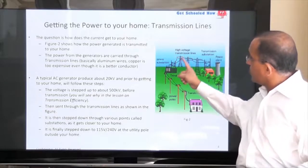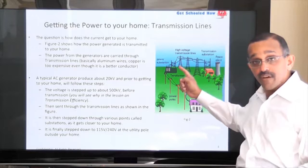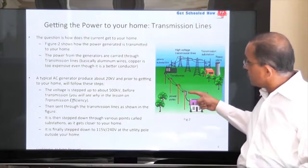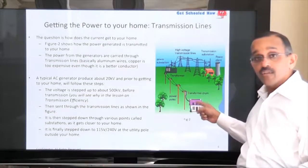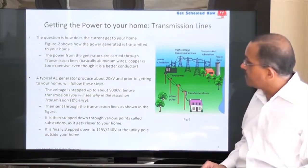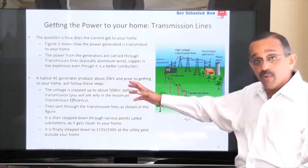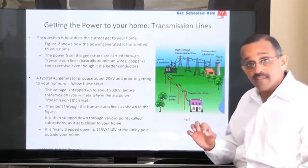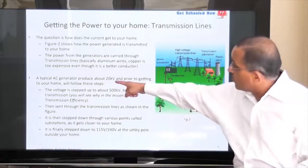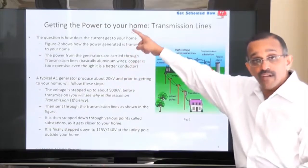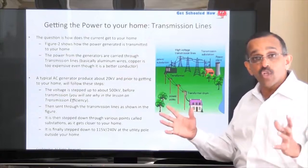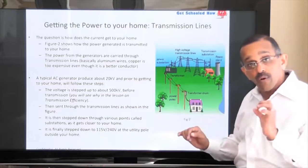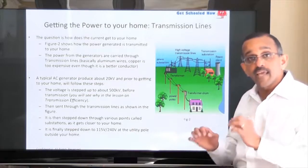When transferring power, it's transferred at very high voltage — about 500 kilovolts. These power substations drop the voltages down before it finally goes to the transformers just outside your home. Why do we have these transformers? From the transmission efficiency lesson plan, the reason we step up the voltage from 20 kilovolts to 500 kilovolts is to manage and reduce the power loss that takes place while transmitting. Go to the transmission efficiency lesson plan and you can see that there.